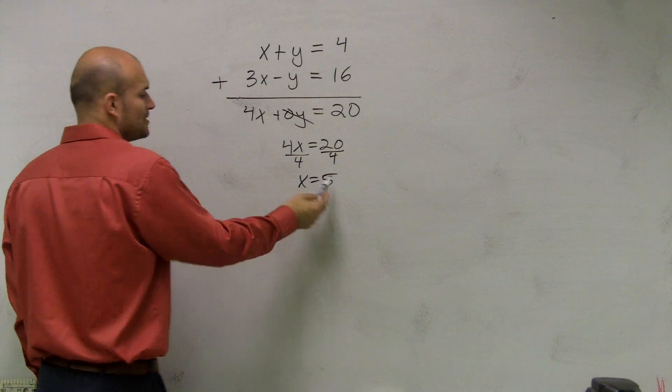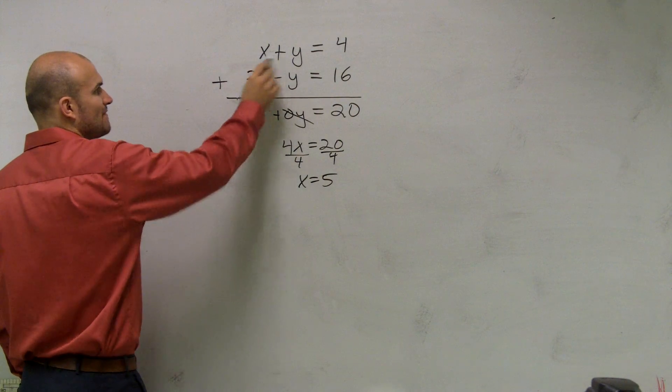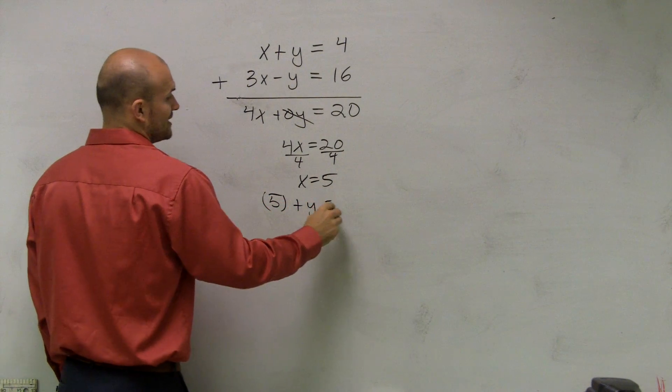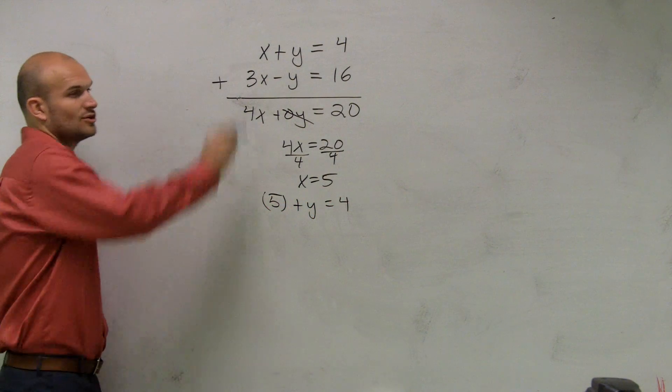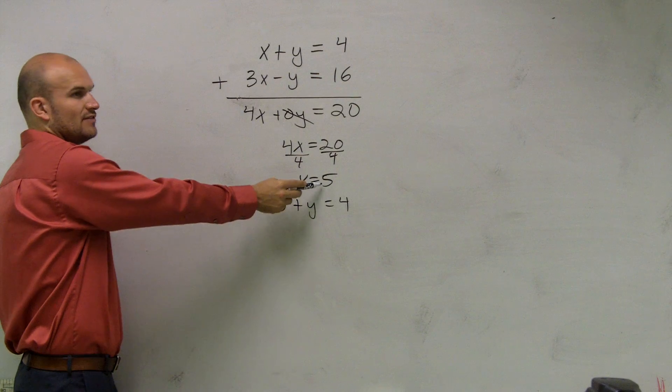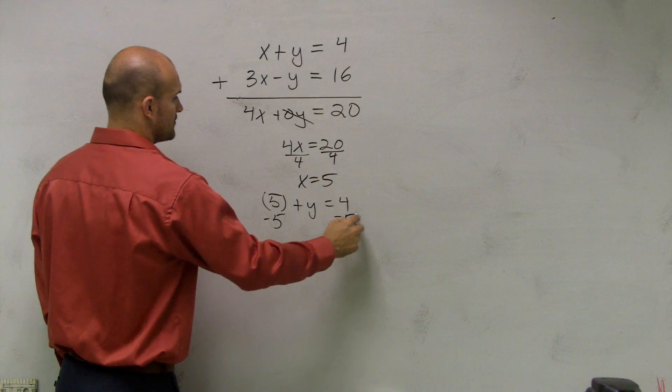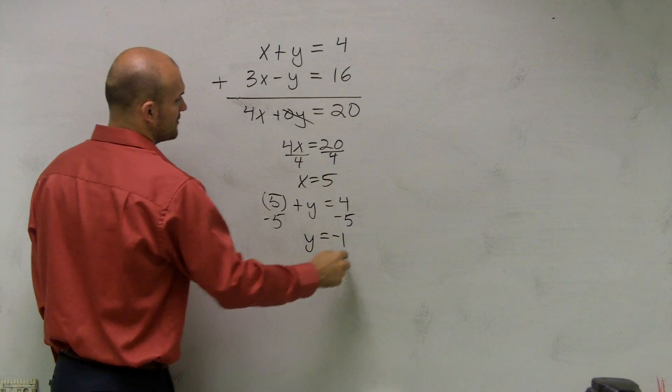I need to plug the value of 5 for one of my values of x. So I'll say 5 plus y equals 4. I'll plug it into the first equation. Then I just simply subtract, and what I get is y equals negative 1.